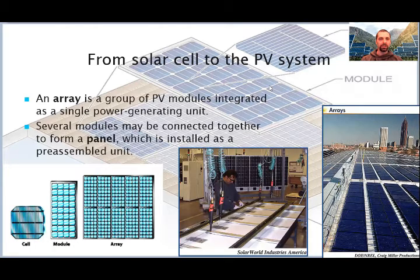The next step in the system is the array. The array is a complete PV power generating unit, consisting of a number of individual electrically and mechanically integrated modules with structural supports, trackers or other components. The term panel is also used in relation to modules and arrays. Sometimes, panel is used as an alternate term for a module. More commonly, the term panel refers to an assembly of two or more modules that are mechanically and electrically integrated into a unit for ease of installation in the field.